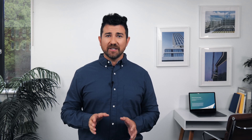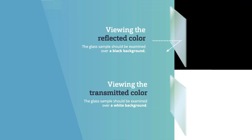When looking at a building from the outside, the appearance of the glazing during normal daytime conditions will usually be dominated by the reflected color. When looking at a building from the outside at nighttime, the glazing appearance will usually be dominated by the transmitted color. This transmitted color can also be observed during daytime if white blinds or shades are drawn.